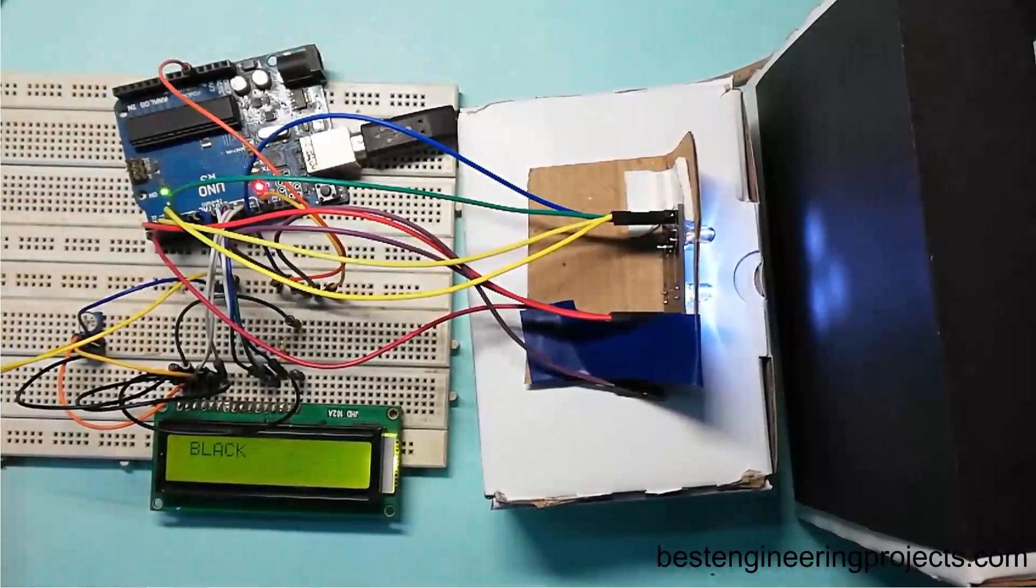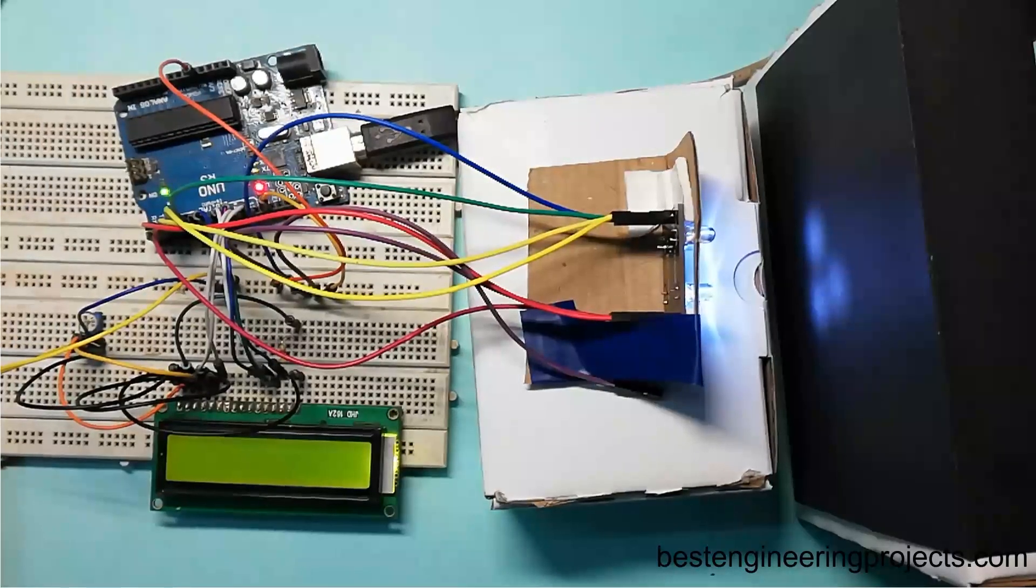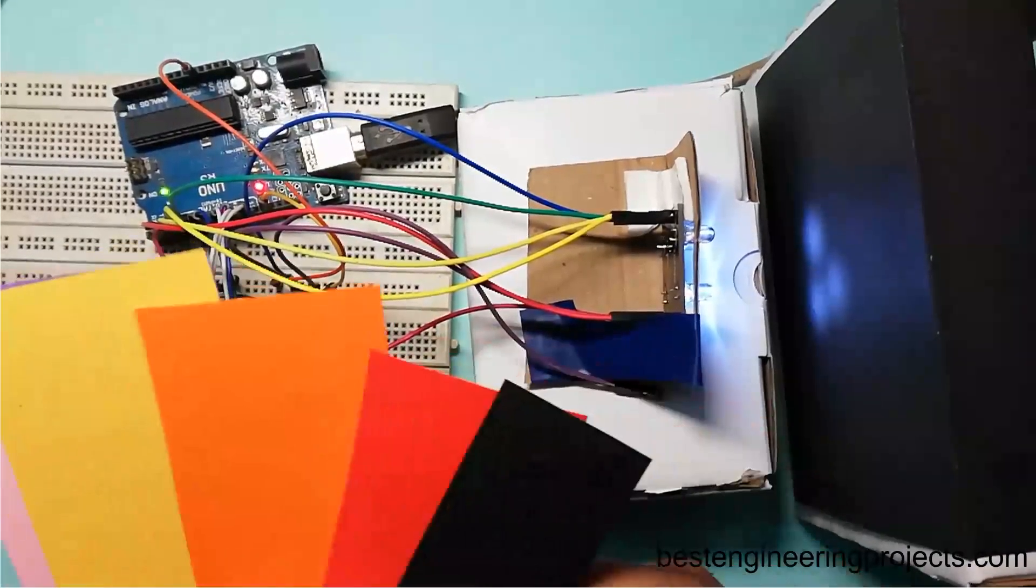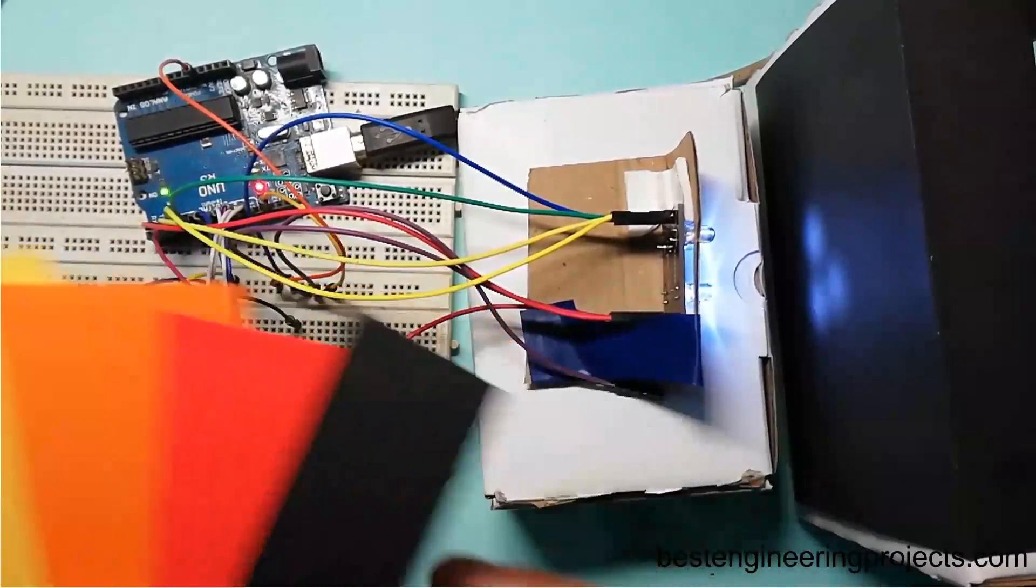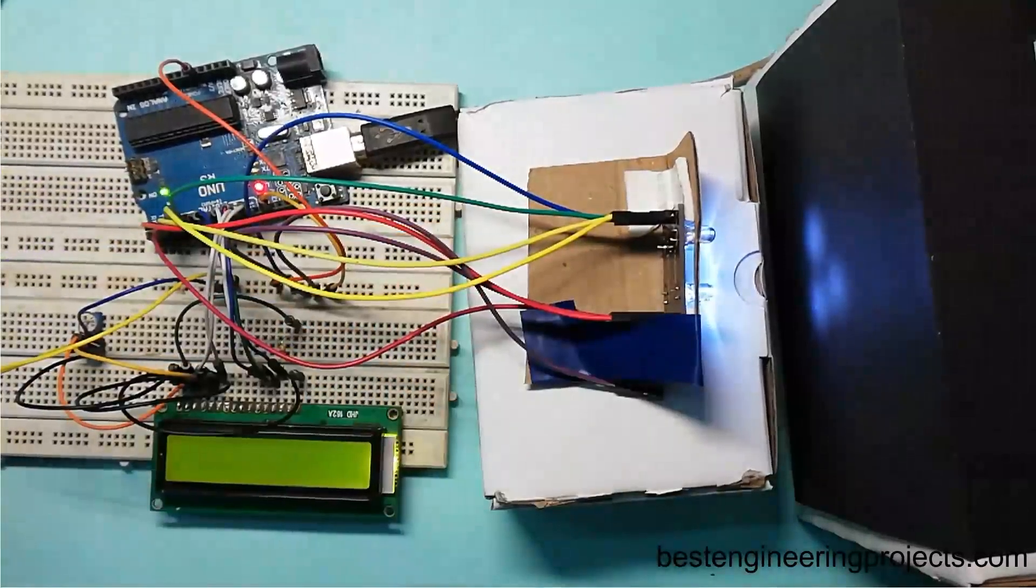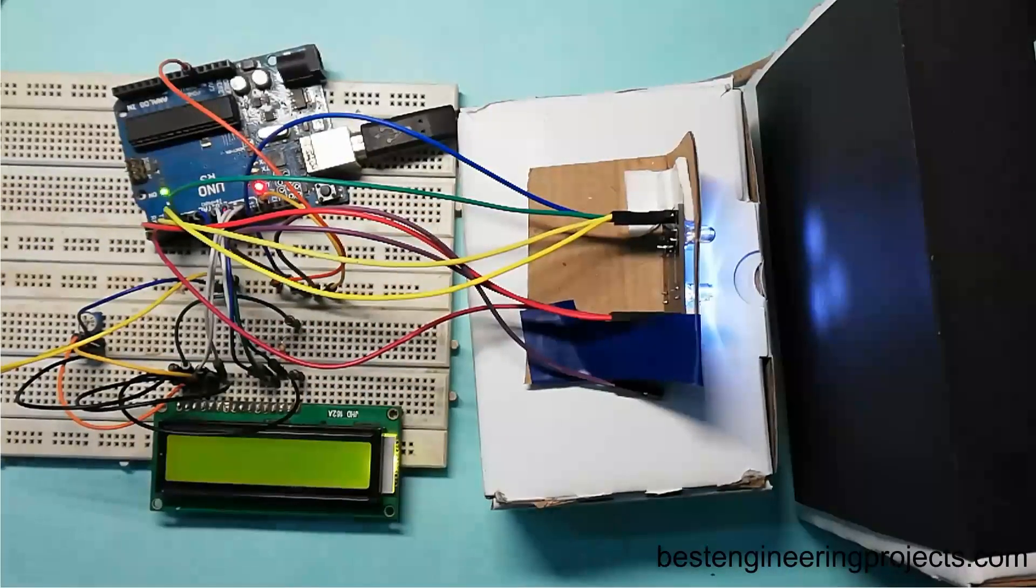Hello, my name is Krishna from Best Engineering Projects, and today in this video I'm going to show you how to make an Arduino color sensor project using the TCS230 sensor module. In this project, I'm going to show you how to detect different types of colors using this module and this Arduino board. Before starting, please subscribe to the channel and click on the bell icon in order to get notifications of every project that we will upload in this channel.